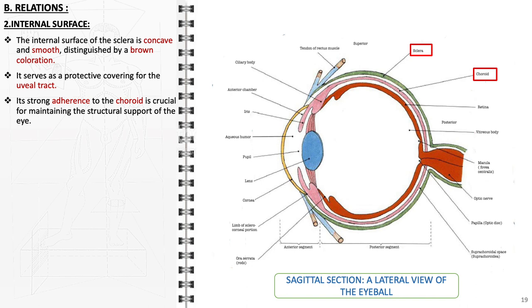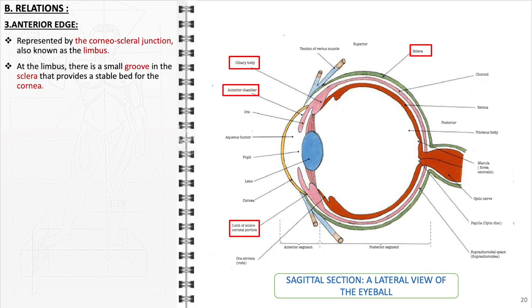The anterior edge of the sclera is characterized by the corneoscleral junction, commonly referred to as the limbus. This junction is a critical transition point between the sclera and the cornea. Notably, at the limbus, the sclera features a small groove. This anatomical feature is significant as it provides a stable and precise bed for the cornea, facilitating its proper placement and alignment with the rest of the eye.